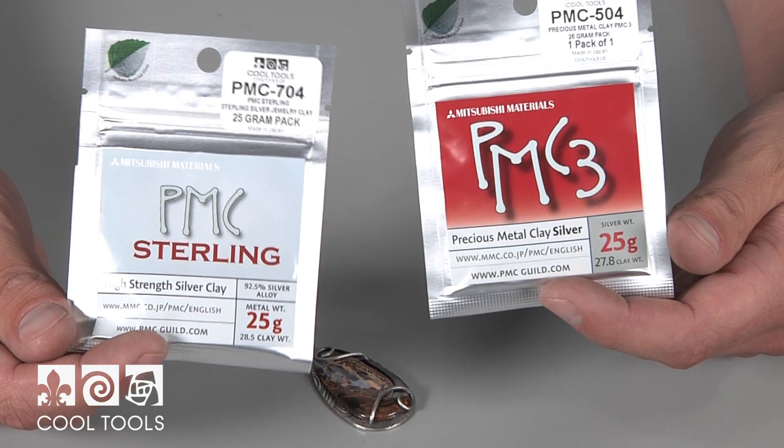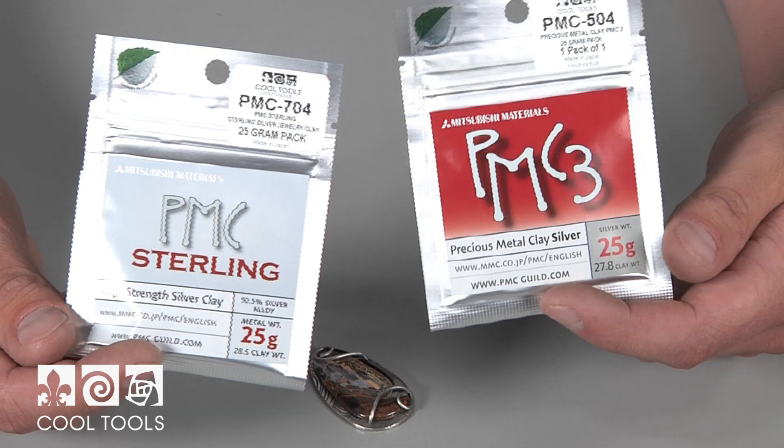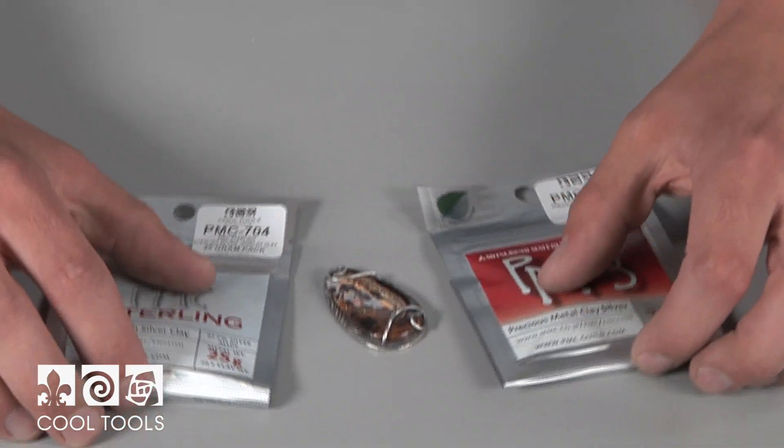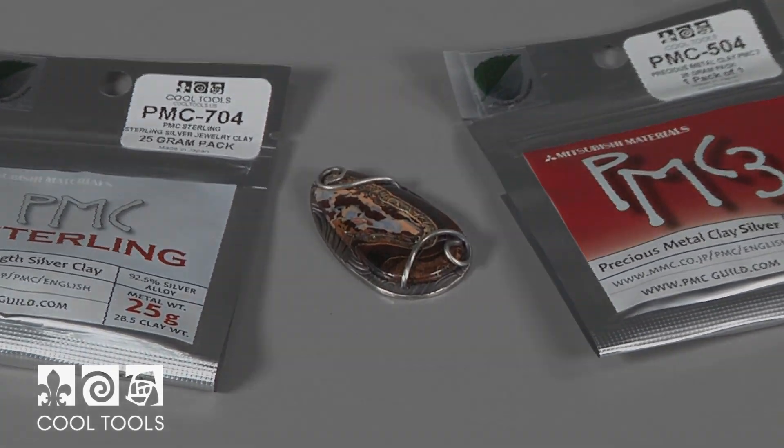PMC 960 is 96% fine silver, which gives you all the strength you need for any jewelry project. 960 provides all the benefits of PMC III and PMC Sterling, and creating it is quick and easy.